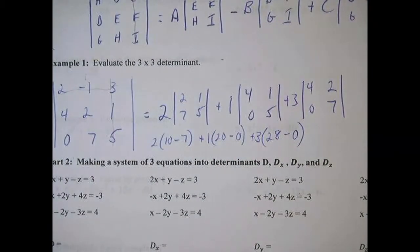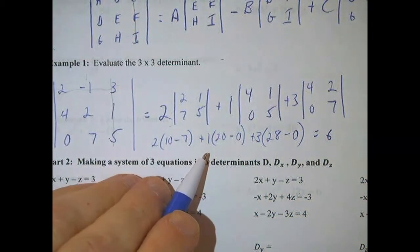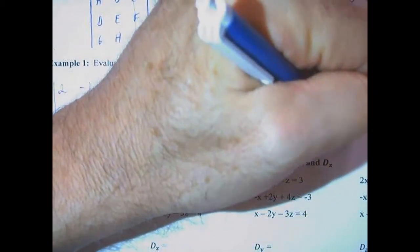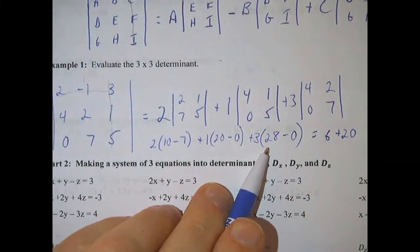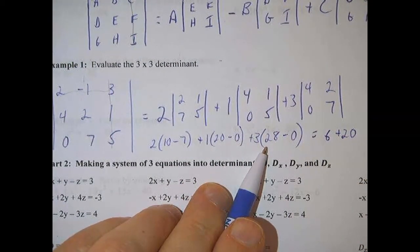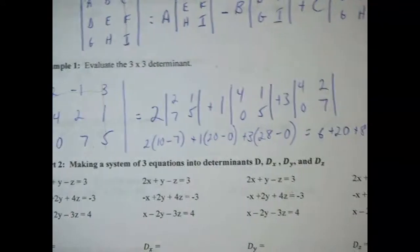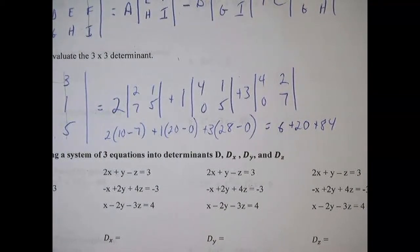So we've got 2 times 10 minus 7 plus 1 times 20 minus 0 plus 3 times 28 minus 0. And then this is 2 times 3, which is 6. This is 1 times 20, which is plus 20. And this is 3 times 28, which is 84. Add these together and you get 110.